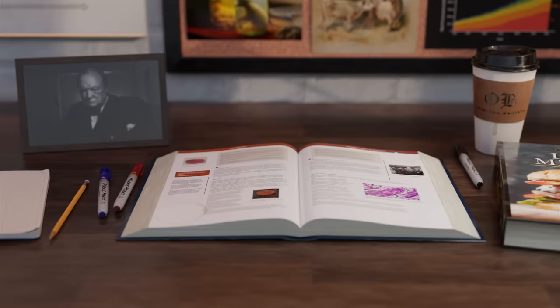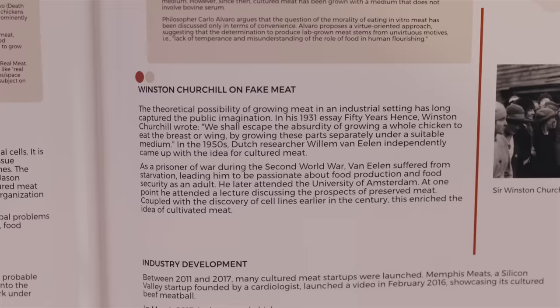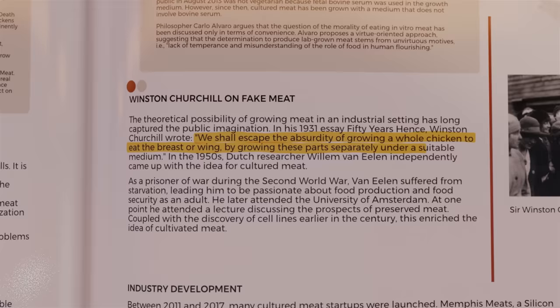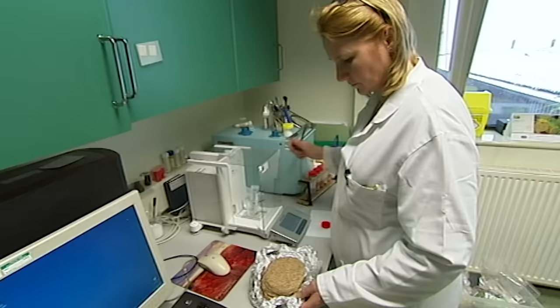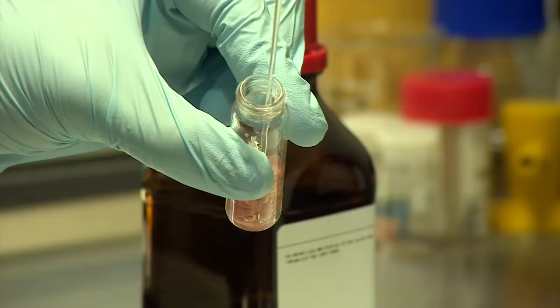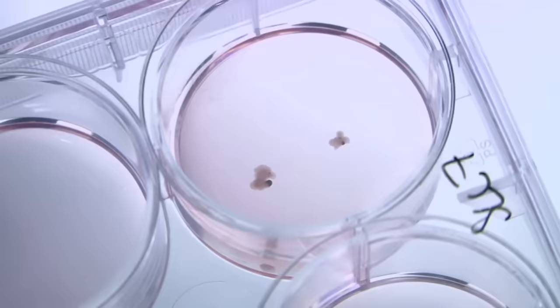The idea of growing meat without killing any animal has been around for a surprisingly long time. In 1931, Winston Churchill even said, 'We shall escape the absurdity of growing a whole chicken in order to eat the breast or wing, by growing these parts separately under a suitable medium.' 82 years later, his prediction would become a reality. The first lab-grown burger was eaten in 2013, and since then, it has been a race to market for dozens of food tech startups. Lab-grown, or cultured meats, use practices from regenerative science to grow meat without needing to grow an animal.